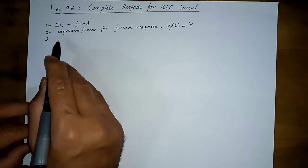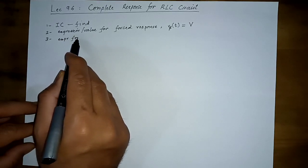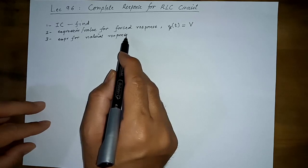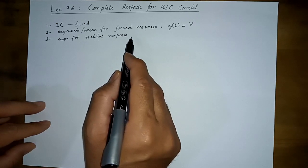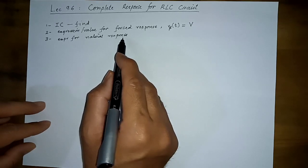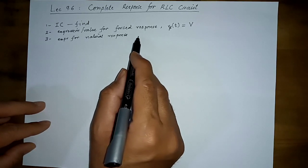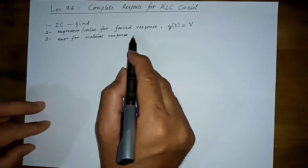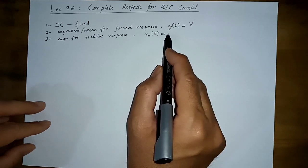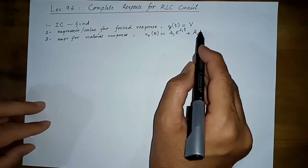In finding this final response or the ultimate steady-state value, you may also need the knowledge discussed for finding initial conditions. The third step is to write an appropriate expression for the natural response of the circuit with the necessary number of arbitrary constants — like A1, A2, S1, S2.